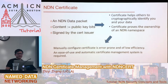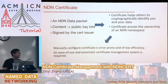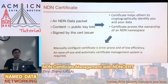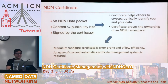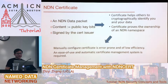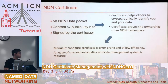A certificate proves the ownership of an NDN namespace. For example, if I get a certificate called UCLA CSG from the UCLA authority, then I have ownership of the UCLA CSG namespace because I can issue namespace certificates to my devices. For instance, I can issue a UCLA CSG iPhone certificate to my phone, meaning I can manage my namespace using my certificates. Manually configuring certificates is error-prone and low efficiency, so we want an easy-to-use, automatic certificate management system to help us get certificates and issue certificates to other entities.